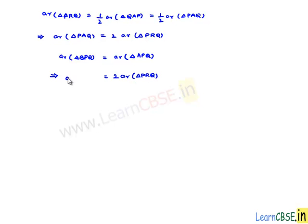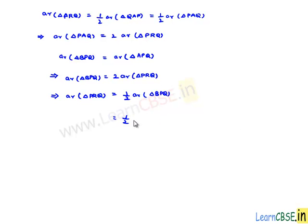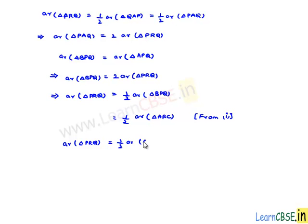From the equation, area of triangle BPQ equals area of triangle APQ, which equals 2 times area of triangle PRQ. This implies area of triangle PRQ equals half times area of triangle BPQ. From the first proof, area of triangle PBQ equals area of triangle ARC. Substituting, we finally get area of triangle PRQ equals half times area of triangle ARC. This completes the second proof.